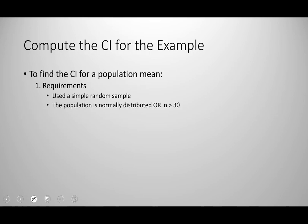Now let's look at how to actually compute the confidence interval for the coin example. The first thing we do is check our requirements. There are two: first, we use a simple random sample — for our coins it doesn't say, so we assume it was a simple random sample. Second, the population is normally distributed or the sample size is greater than 30. Our sample size is 40 coins, so we've met that requirement and can continue.